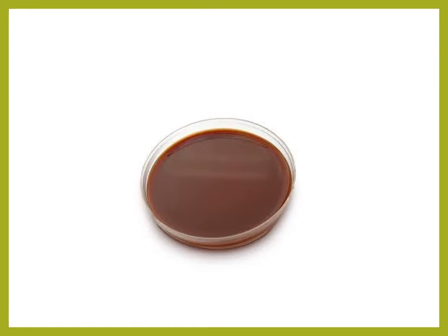The next spot is chocolate agar, easily identified by its color. It is also an enriched media, prepared similarly to blood agar but blood is added at 70 degrees centigrade, which lyses the RBCs. While most fastidious organisms grow on blood agar, chocolate agar is specifically needed for Haemophilus influenzae, which requires growth factors X and V that are released when RBCs are lysed.